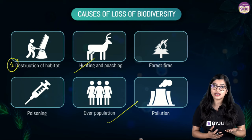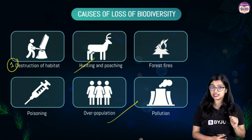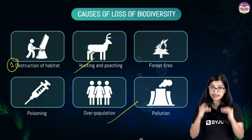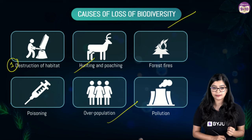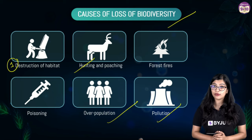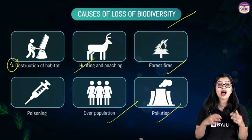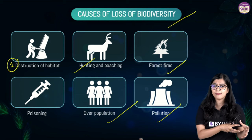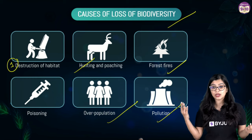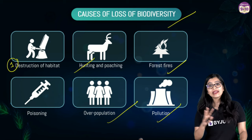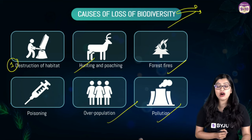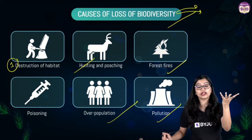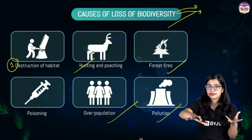This has contributed to species declining — causing loss of biodiversity. Along with this, pollution has also been a factor, with natural resources being polluted. Forest fires due to climate change or other reasons have caused destruction of habitat, resulting in loss of biodiversity. Poisoning has also contributed. There has been a severe loss of biodiversity, and we know that an ecological system needs balance — disruption could have a large impact, which is where we see the need for conservation.